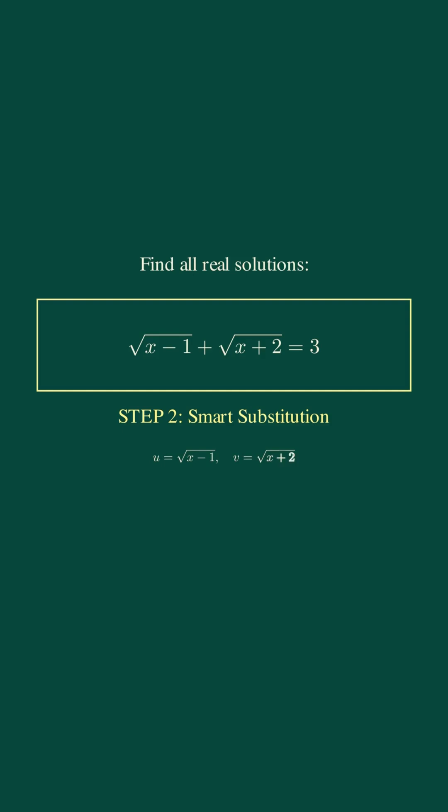and v equals square root of x plus 2. Squaring both sides: u squared equals x minus 1, v squared equals x plus 2. Subtracting: v squared minus u squared equals 3. Step 3: Solve the system. We have u